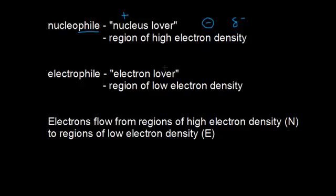An electrophile is an electron lover — something that is attracted to electrons. Since electrons are negatively charged, something that's attracted to something negatively charged must itself be positively charged. So opposite charges attract. Electrophiles can have a full positive formal charge or a partially positive charge, and these are regions of low electron density. So electrons flow from regions of high electron density, which is a nucleophile, to regions of low electron density, which are electrophiles. This is the idea of Coulomb's law in physics.